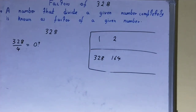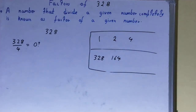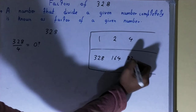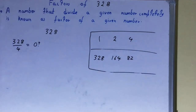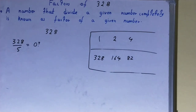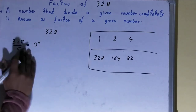Let's check with 4: 4 times 82 equals 328, yes — 4 is a factor. We write it in the list, and 4 times 82 equals 328, so 82 will also be a factor. After 4, we check with 5. Is 328 divisible by 5? No, the last digit is neither 0 nor 5, so 5 is not a factor.